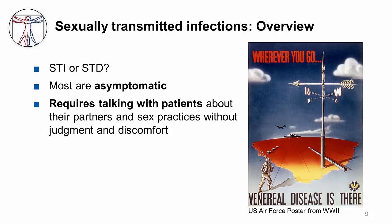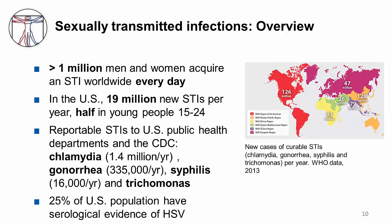This United States Air Force poster was used to remind servicemen fighting abroad during World War II that STIs exist. The use of images versus just text was very powerful in these public health campaigns in the military as well as back at home. The magnitude of sexually transmitted infections is staggering — more than one million men and women acquire an STI worldwide every day. In the United States, there are about 19 million new STIs per year, and half of these are in people under 25. Note that we must report certain STIs to your local Department of Public Health as well as to the state and the Centers for Disease Control.